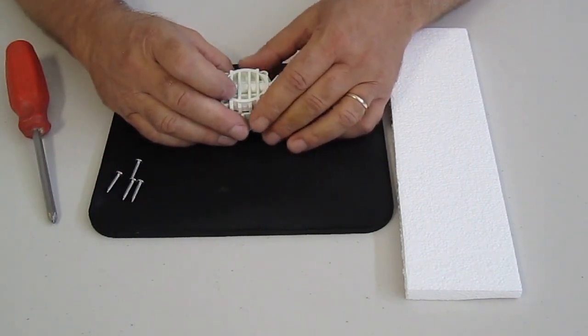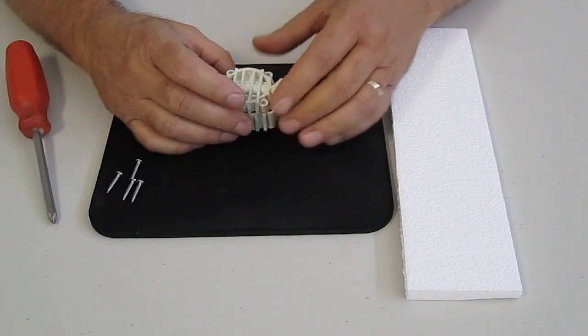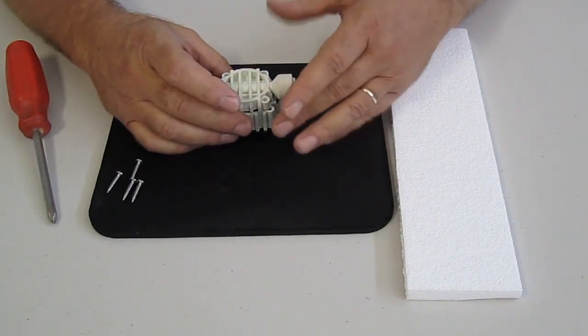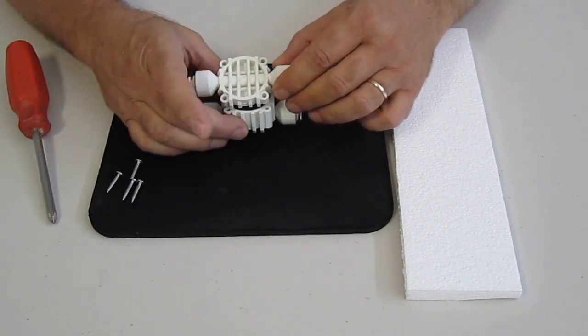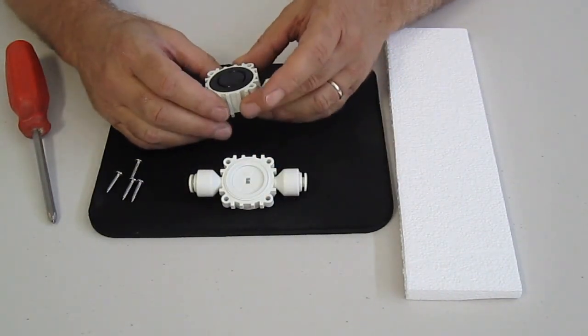Now if you have an automatic shutoff valve that is plugged up or gummed up from being used for so many years, you can take it apart and clean it. So we're going to pull the top off, and inside we're going to go ahead and pull out the diaphragms.